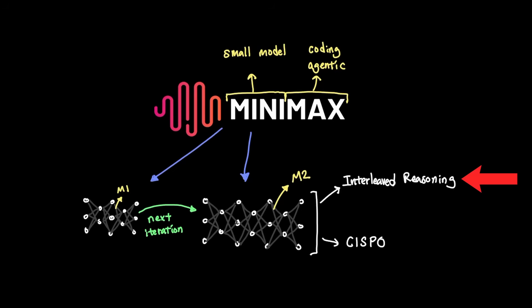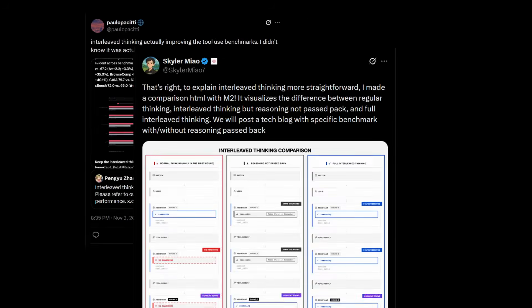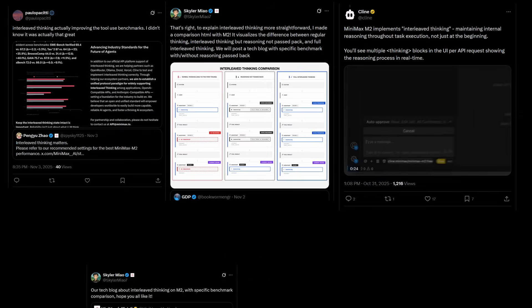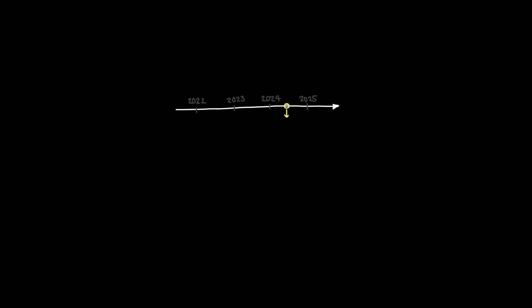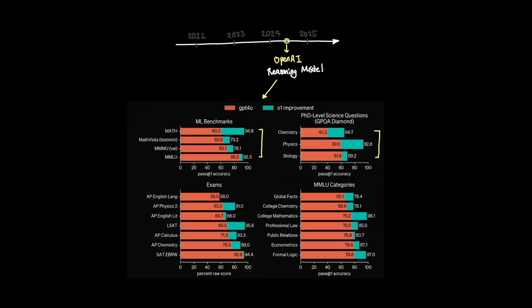Let's start with the interleaved reasoning. And there's been quite a lot of posts on X talking about the effectiveness of interleaved reasoning. Regarding M2, ever since OpenAI popularized reasoning model in mid-2024, the AI industry saw how much reasoning models demonstrated a clear advantage in intelligence compared to non-reasoning models.